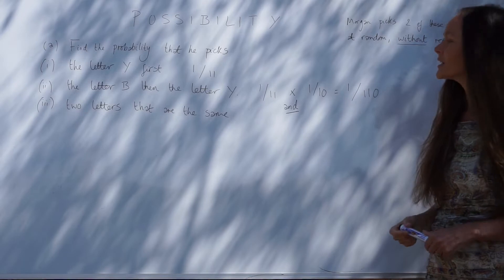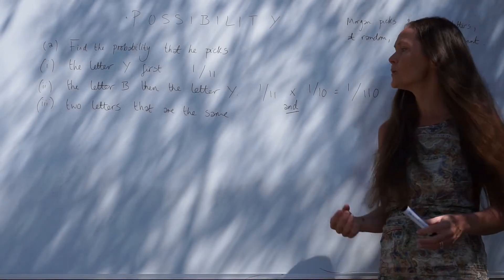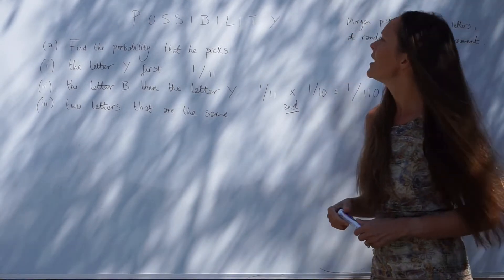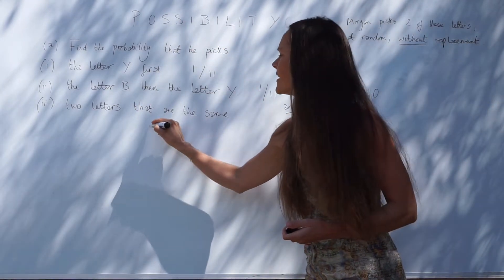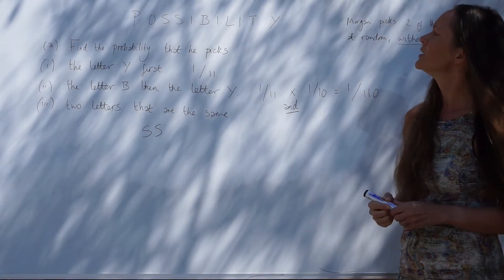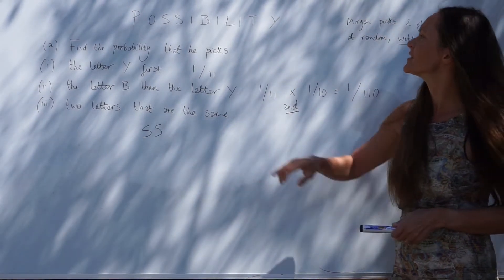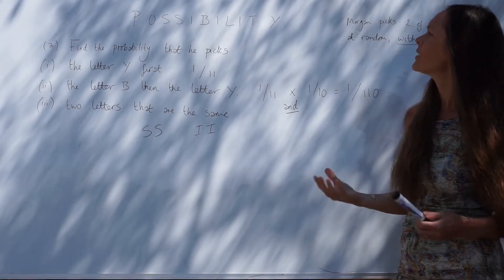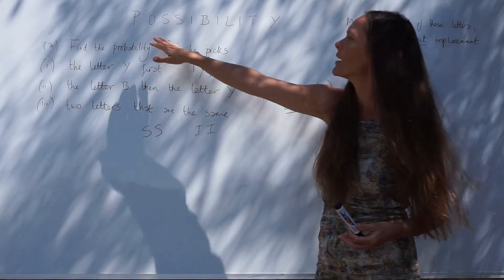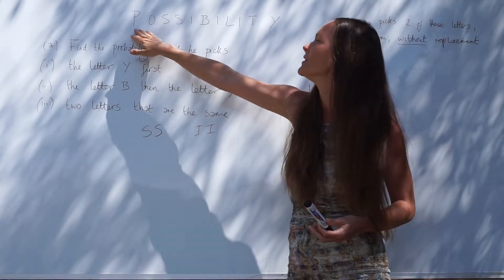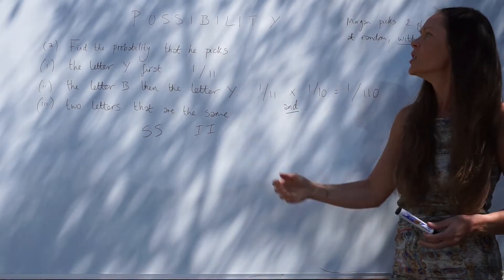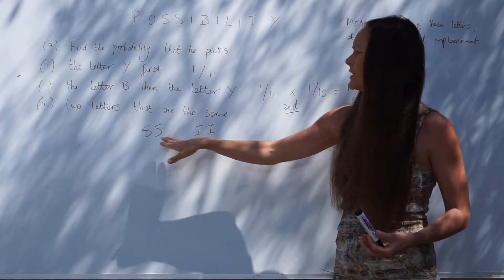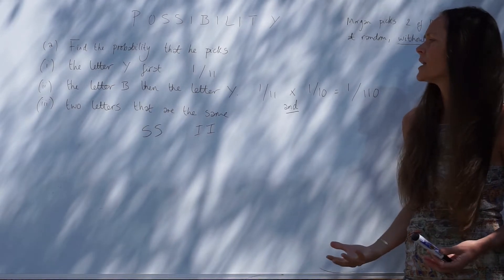For the next part we have to find the probability that he picks two letters that are the same. Looking at the word 'possibility', there are two letter S's so he could pick an S followed by an S. There are also three letter I's so he could pick an I followed by an I. All other letters are singular — there's only one P, one O — so it's not possible to pick P then P, or O then O, because it's without replacement.